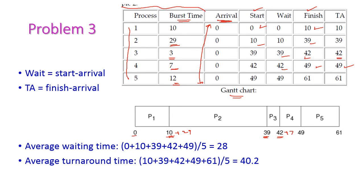The bus time of P4 is 12, so 49 plus 12 equals 61; starting time is 49, finishing time is 61. Because the arrival time is 0, the waiting time — which is start time minus arrival time — means the starting time is the same as waiting time. When it comes to turnaround time, finishing time minus arrival time means the finishing time is the same as turnaround time, since arrival time is 0 for all processes.